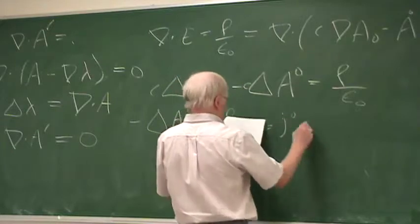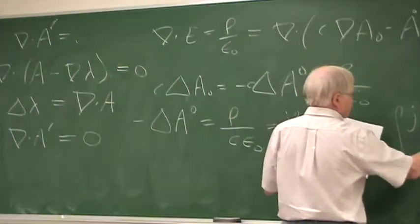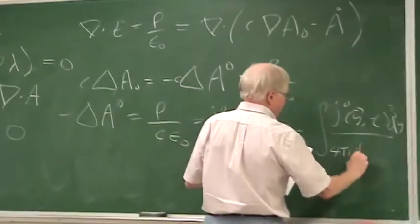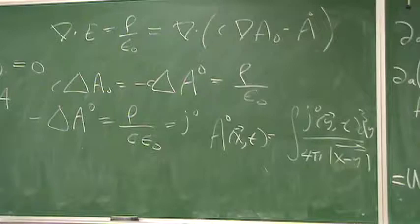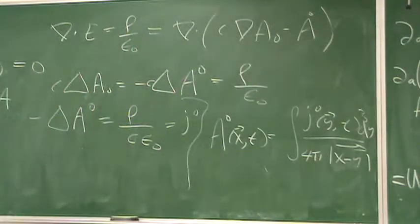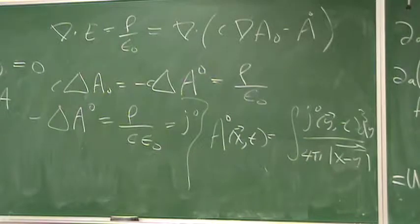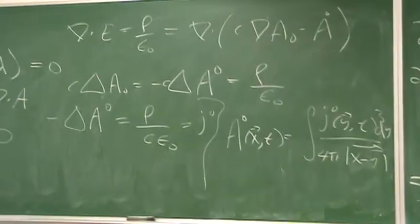We solve for A-zero: A-zero of X and T equals the integral of J-zero of Y and T times d-cubed Y over 4-pi times |X minus Y|. That's the solution of the Laplacian equation, which you've seen in undergraduate electrodynamics. So I've written down the action and Lagrange density. Now starting canonical quantization: the canonically conjugate variable pi-B is the partial derivative of the action density with respect to A-sub-B-dot, which is a space index.